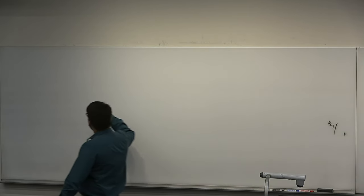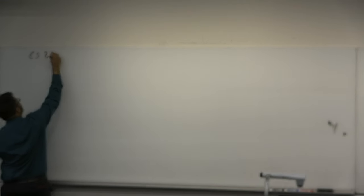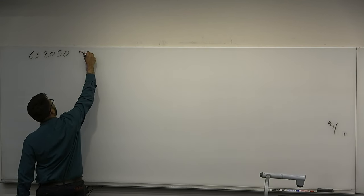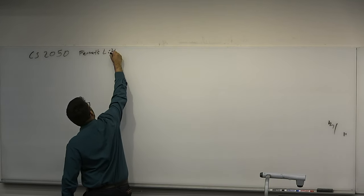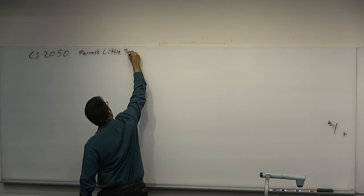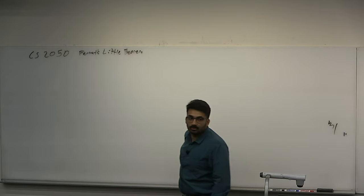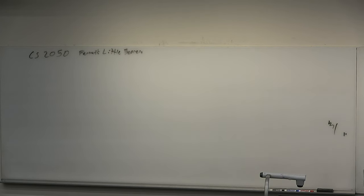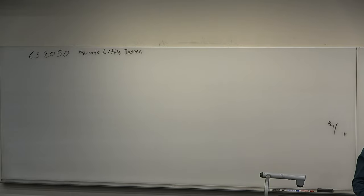Welcome to CS 2050. The topic of today is a little extra — it's called Fermat's Little Theorem. This is the last week we're going to be spending on number theory, and then we have the exam afterwards. This week, we're doing Fermat's Little Theorem, as well as Euler's Theorem and the Euler Phi function. After the break, we're going to do the Chinese Remainder Theorem, and then cryptography on Thursday — RSA. So all basically the last, perhaps even the most difficult parts of number theory, an elegant and beautiful science.